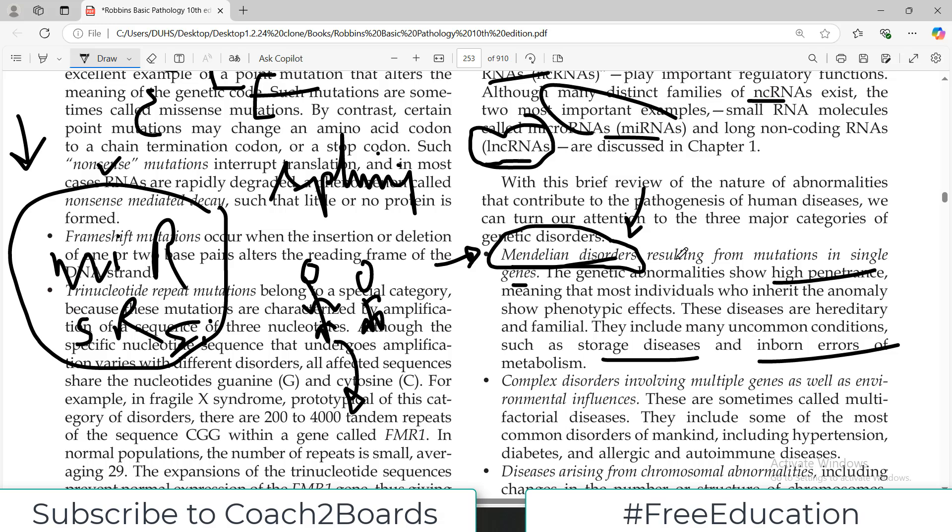We are just introducing this terminology of what are Mendelian disorders. So Mendelian disorders are basically usually not 100% of the time, but usually they are single gene disorders and they have high penetrance from parents to offspring.